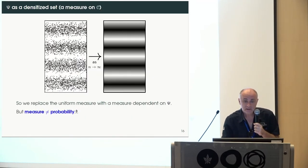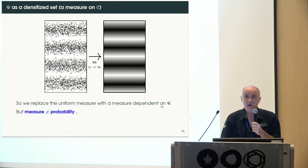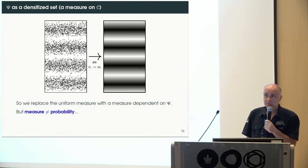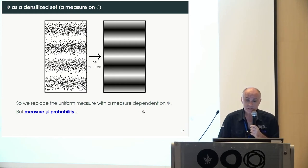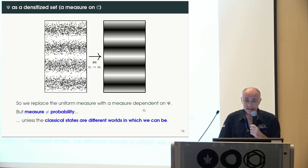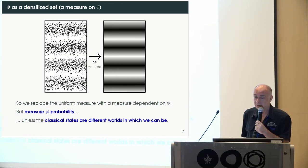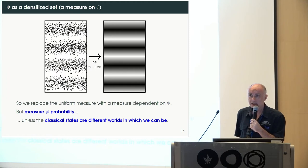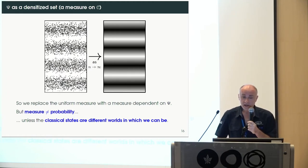I replaced the uniform measure with the measure dependent on ψ. But measure is not the same as probability — I don't claim that measure magically transforms into probability. However, if classical states are actually the worlds in which we can exist, then it makes sense to treat this measure as probabilities.